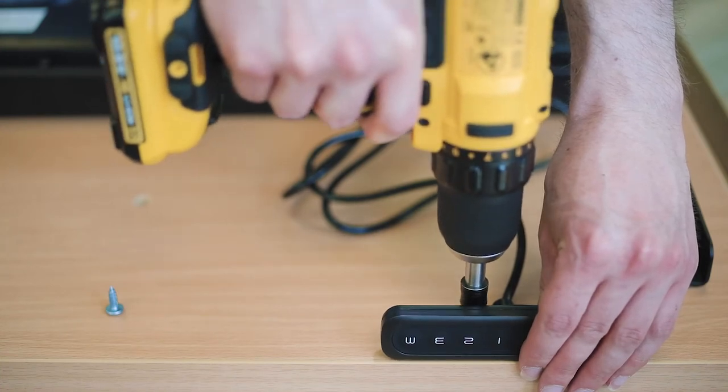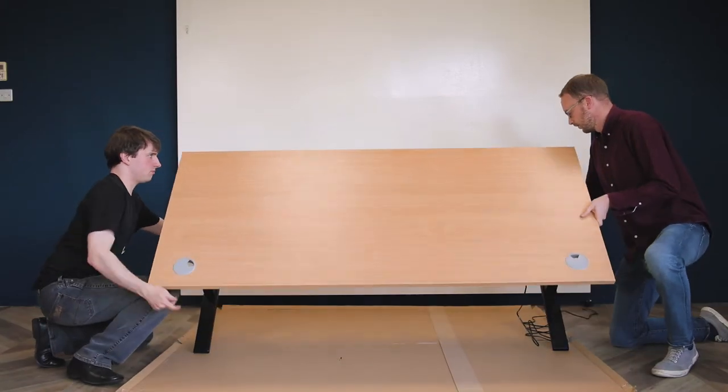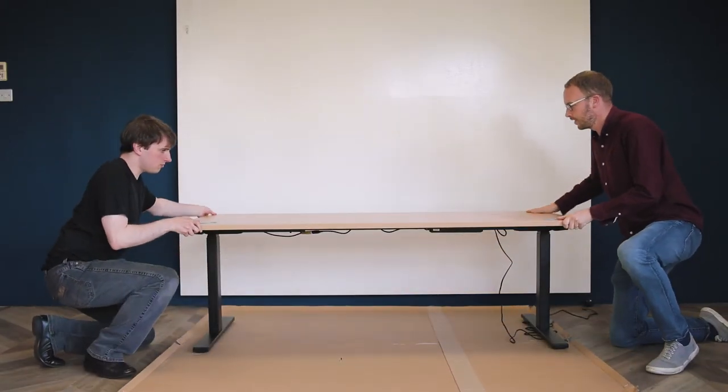Align the control panel to the pre-drilled holes along the front edge of your desk. Once this is complete, ask another colleague to help you turn your desk the right side up.